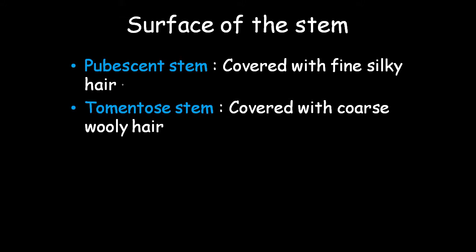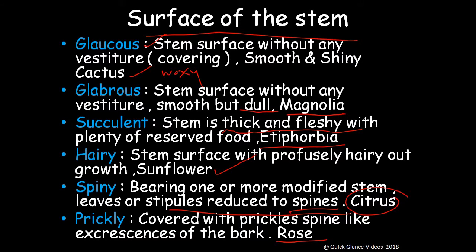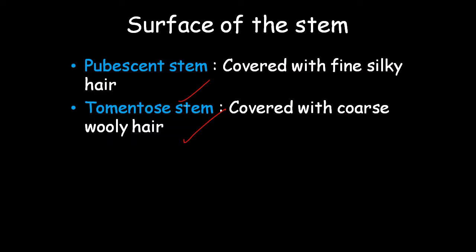Pubescent stems are covered with fine silky hair. Tomentose stems are covered with coarse woolly hair. So on the basis of surface, stems are divided into glaucous, glabrous, succulent, hairy, spiny, prickly, pubescent, and tomentose types.